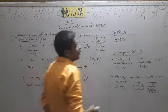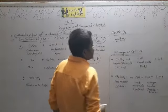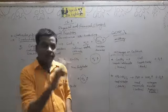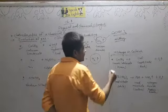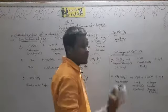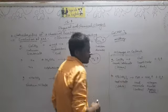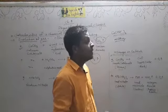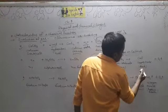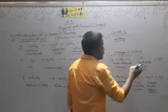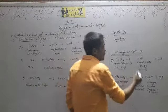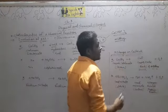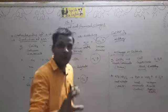Another characteristic of chemical reaction is change in color. Colors में भी change होता है. First example: copper carbonate, जो green color में होता है — when it is strongly heated, it gives us copper oxide which is black in color as a residue, and oxygen gas also evolves.